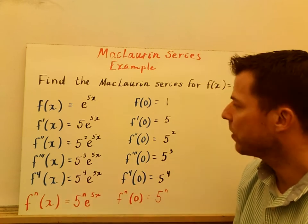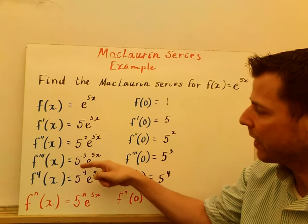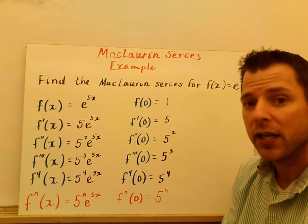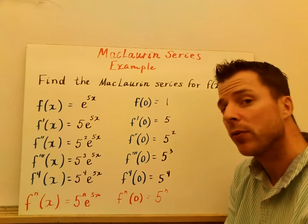So a couple things you want to be careful of. Sometimes we simplify out, but I didn't. Notice how I said 5 squared here, 5 cubed, 5 to the 4th, I didn't simplify those out. It helps us see patterns later on when we're rewriting the rule.